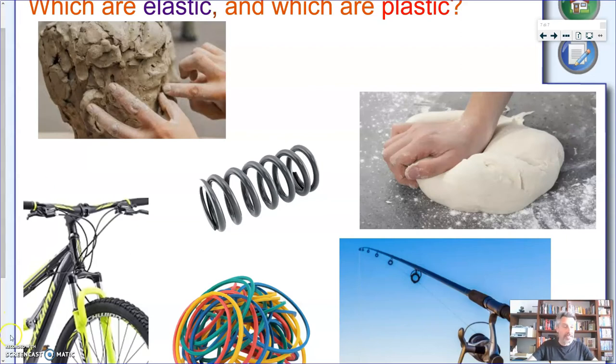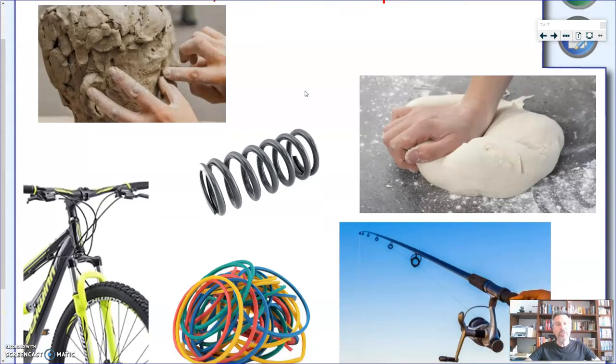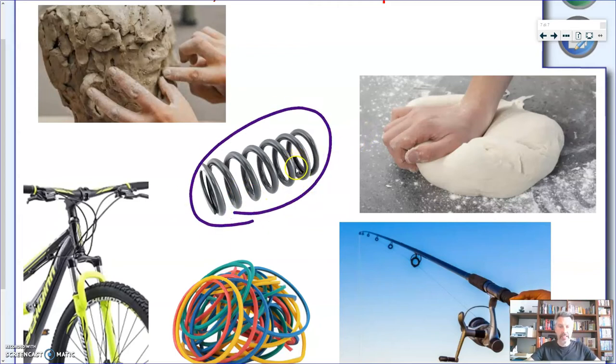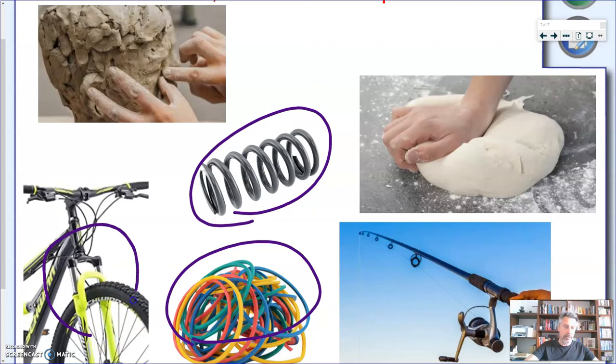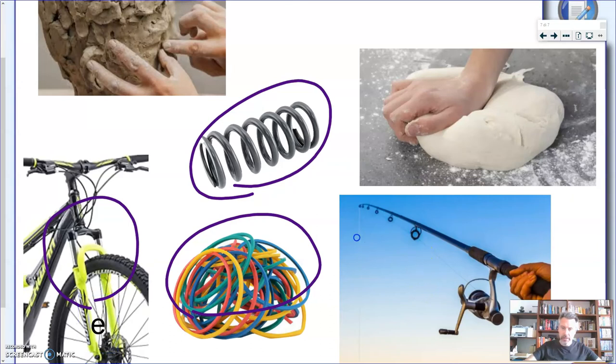Okay let's see now together. We'll start with the elastic objects. First of all we have a steel spring here and this is definitely elastic. The rubber bands are elastic. Now here you might be confused on which part of the picture we're supposed to look at. I was referring to the shock absorbers, so this part on the front of the bicycle. If you have a mountain bike or downhill bicycle you know how useful these are to absorb the shocks when you're in a very rough terrain. And finally another elastic object is the fishing rod.